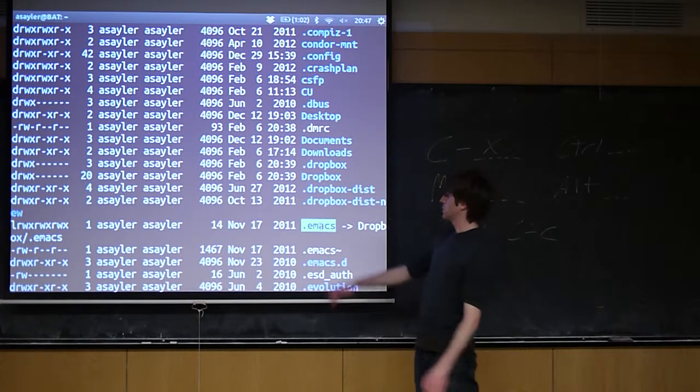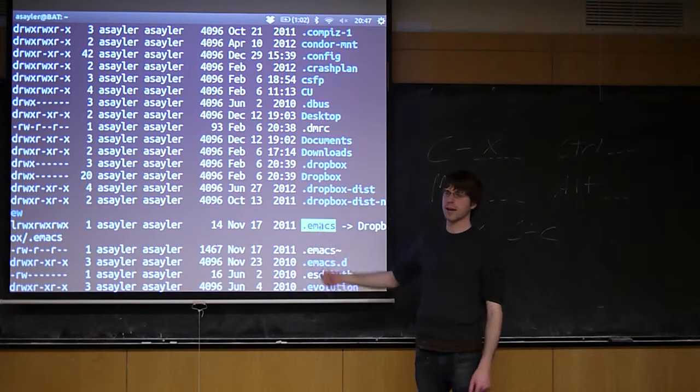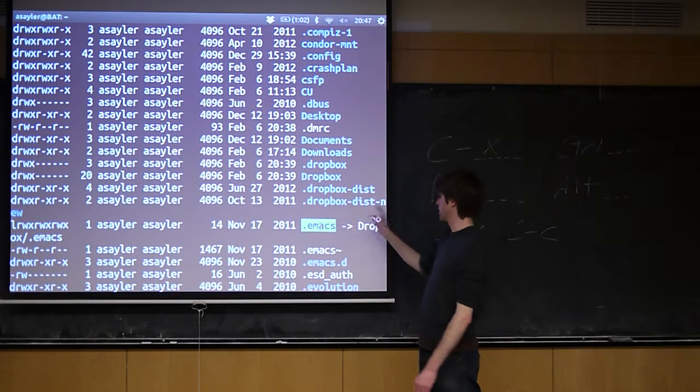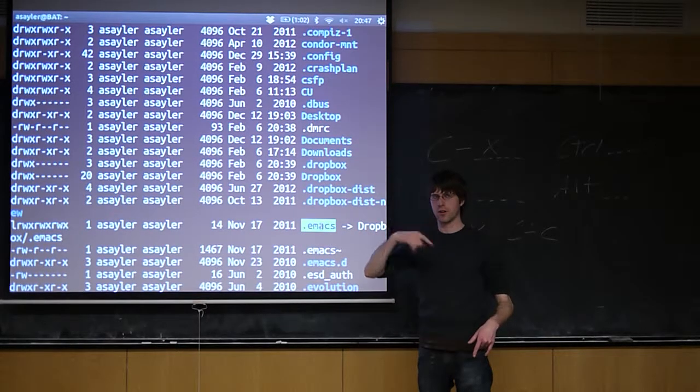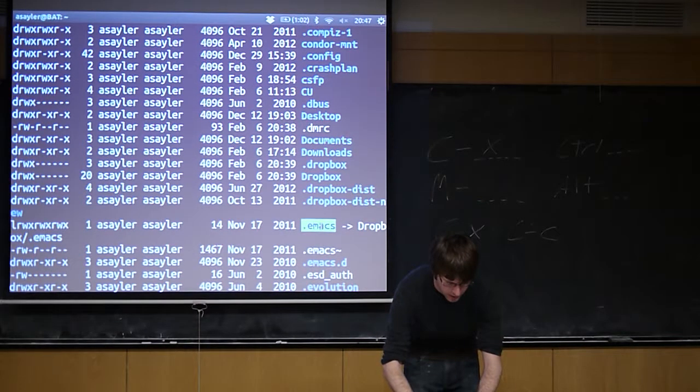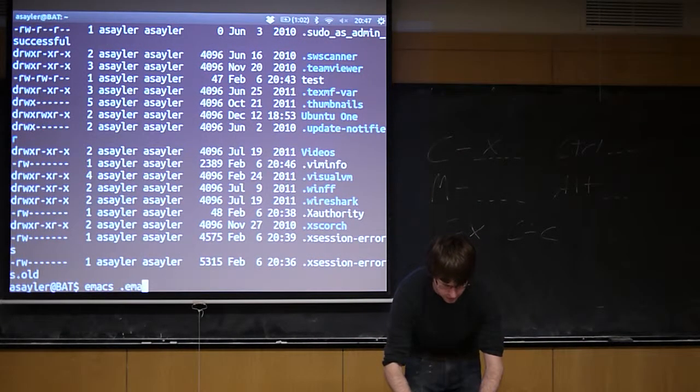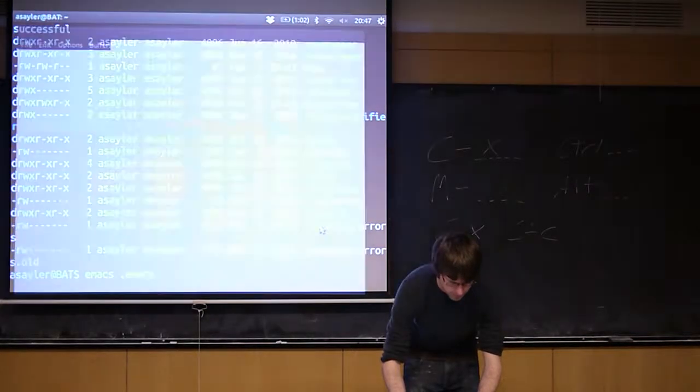This .emacs file essentially is the file that holds all your customizations for Emacs. Mine happens to be a symbolic link to the Emacs file in Dropbox. This is how I sync my Emacs settings across all the different computers I work on. But yours would just be a normal file.